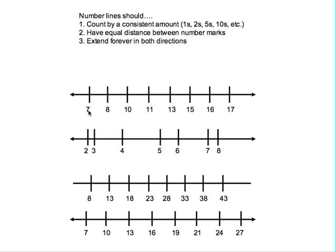If you look at this number line, we start by counting by ones, 7, 8, but then we count by twos, 10, then back to ones, then back to twos, so on and so forth.